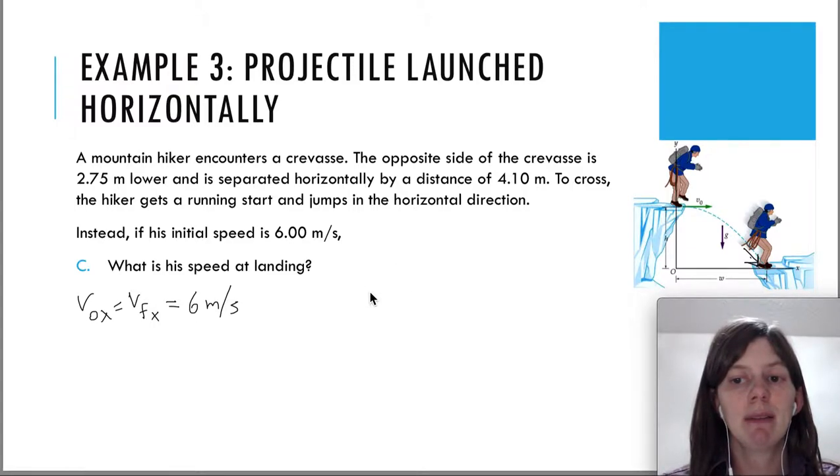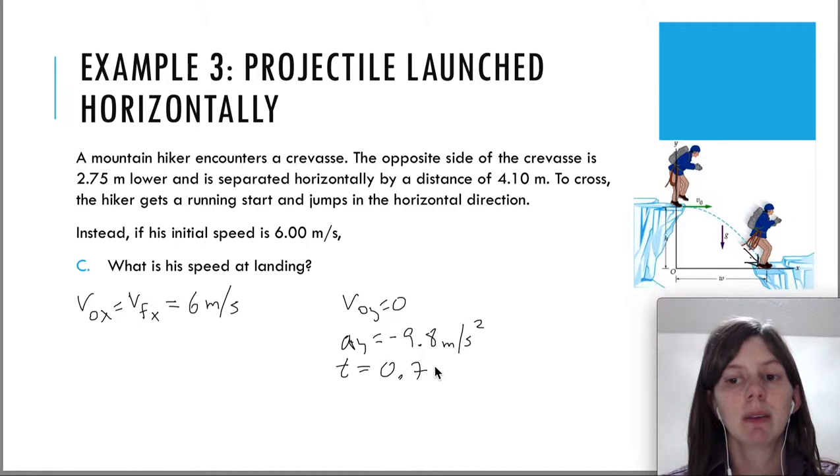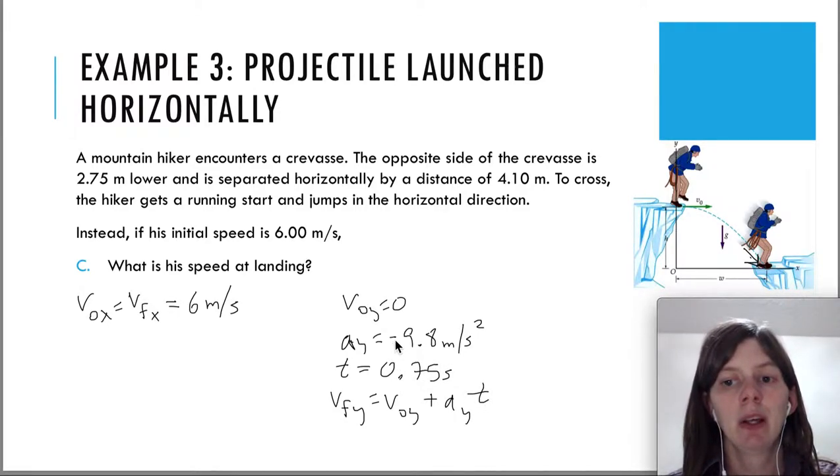So in the y direction, we still have the same variables as before. I'll go ahead and write them down. V initial y is 0. Ay is negative 9.8. And we have the time that we already found. The time is 0.75 seconds. So we can use these variables to find v-f-y. Because v-f-y equals v initial y plus ay t. I'm using that first kinematic equation this time. So the first term cancels out. Let's multiply negative 9.8 by 0.75. And we're going to get negative 7.34 meters per second. We do expect it to be negative. Because the y component is going down.